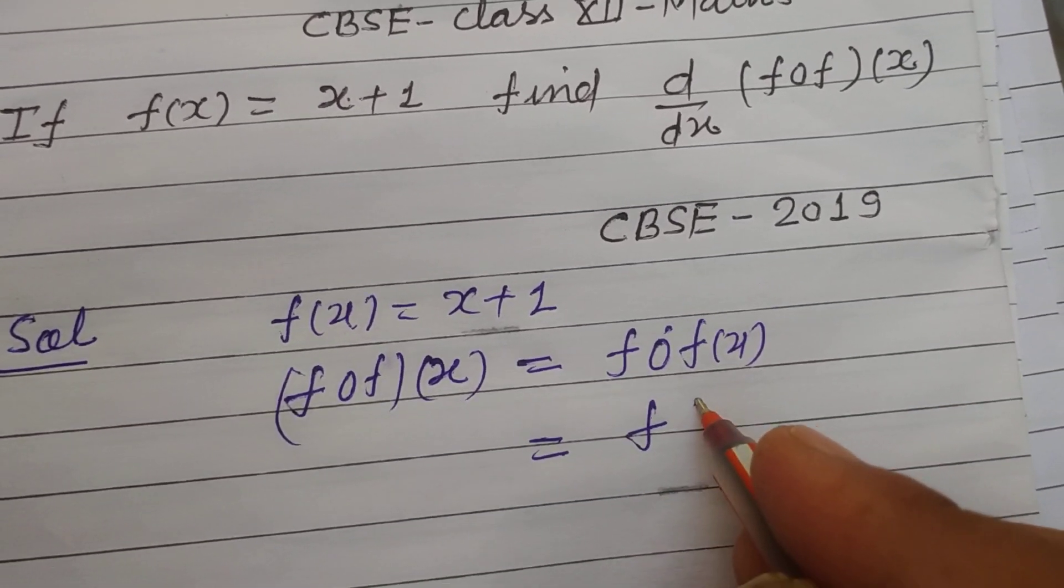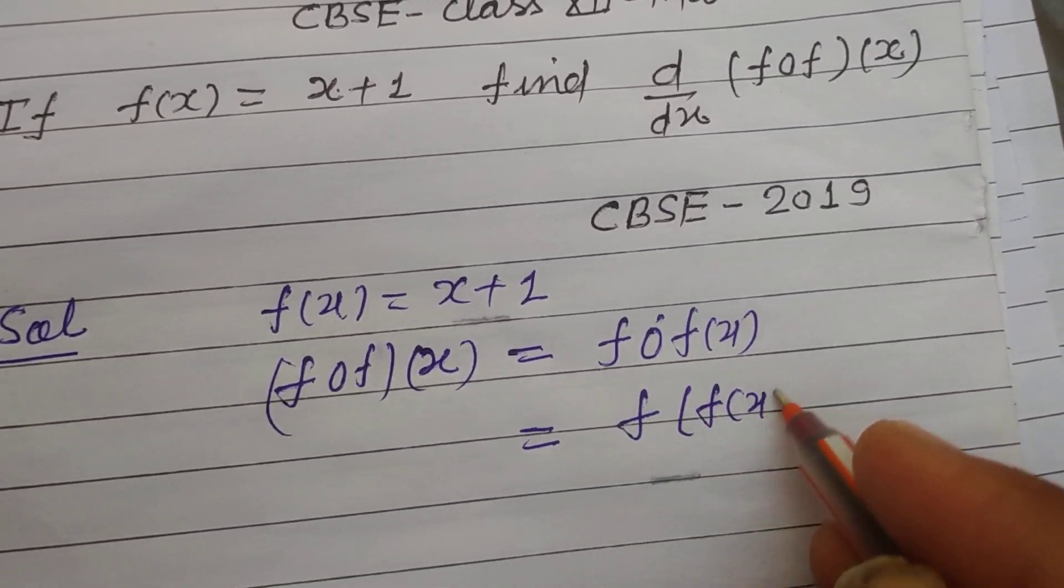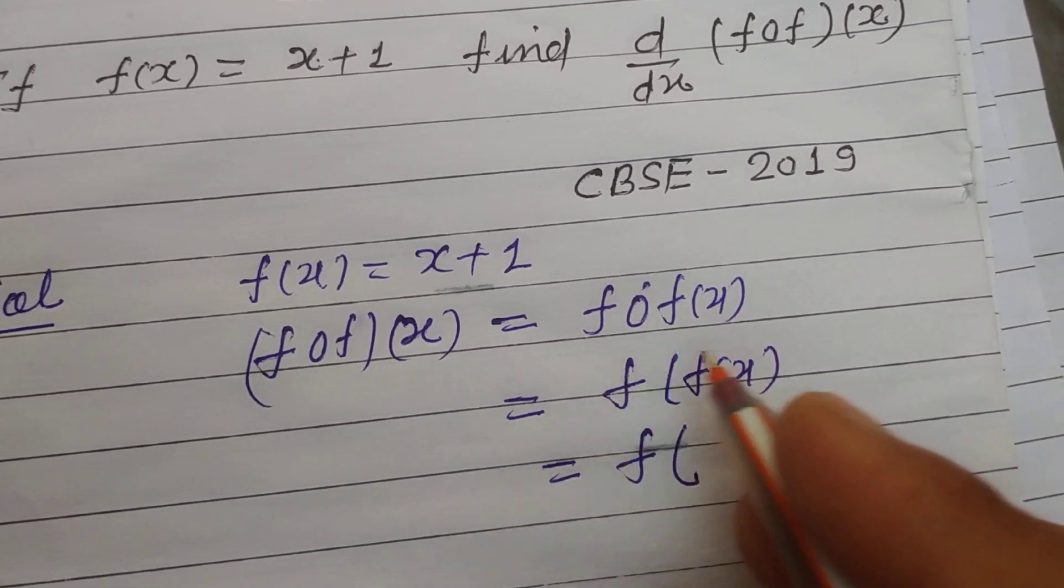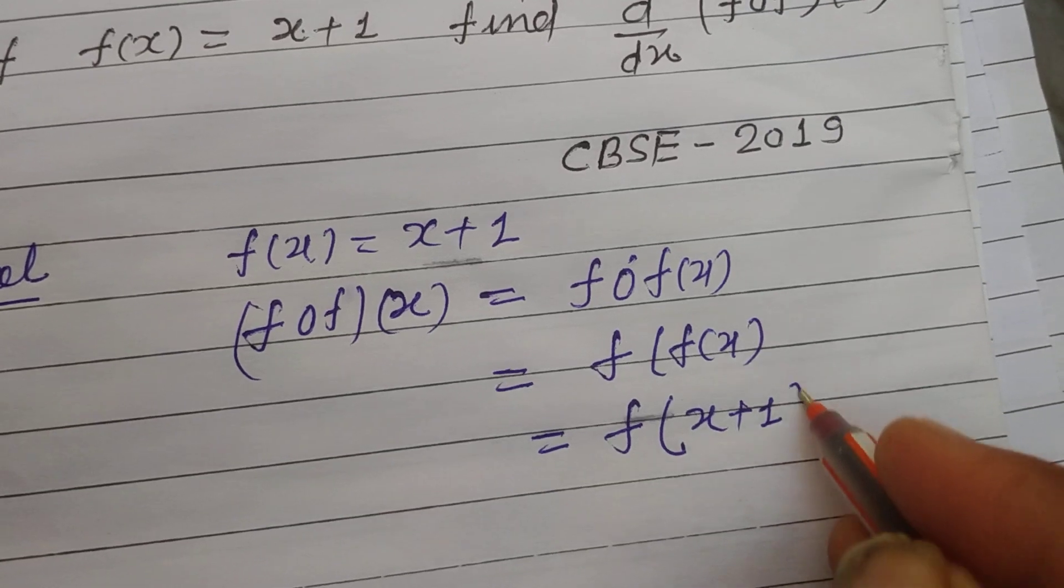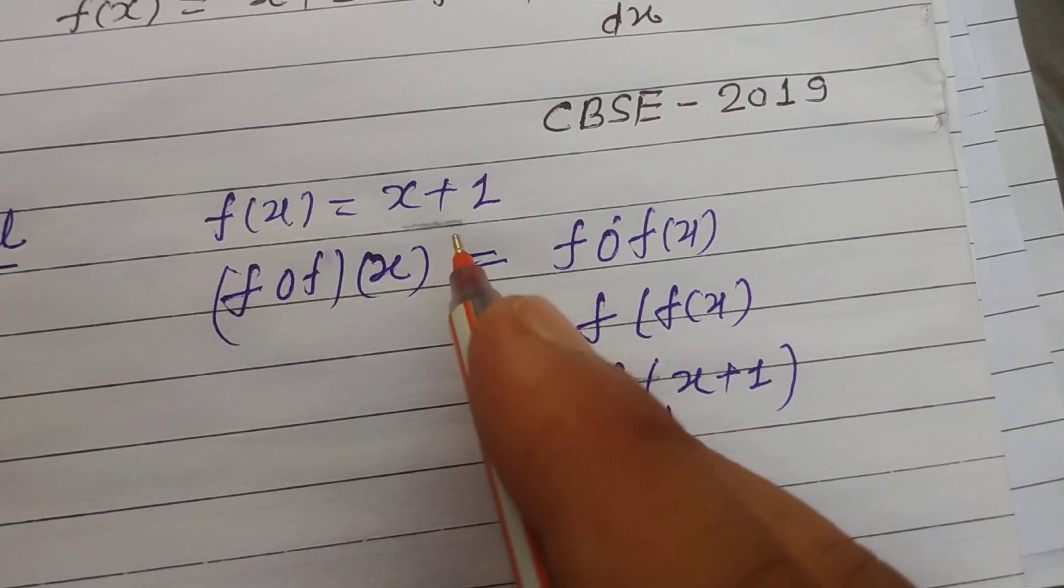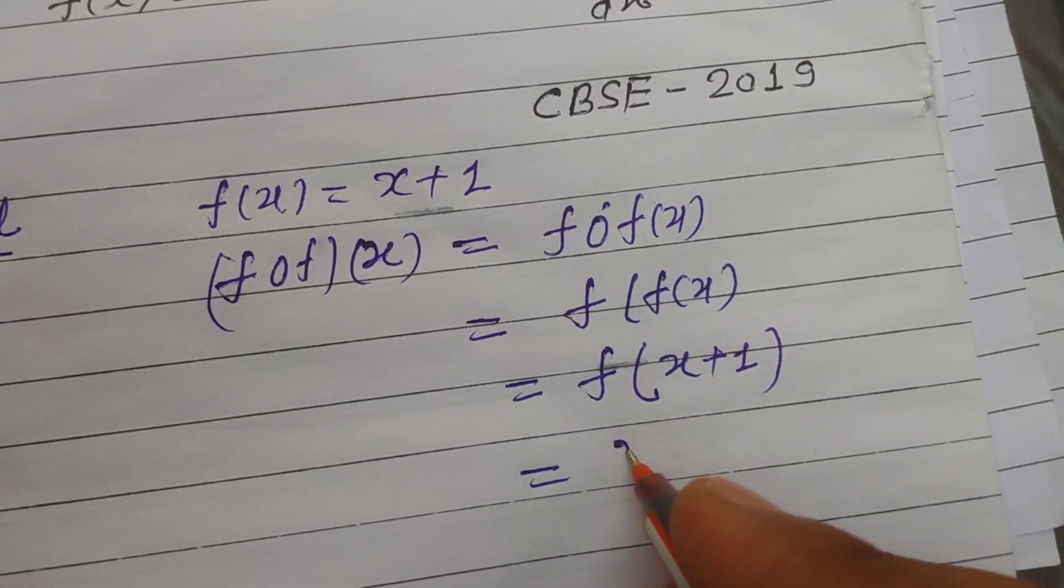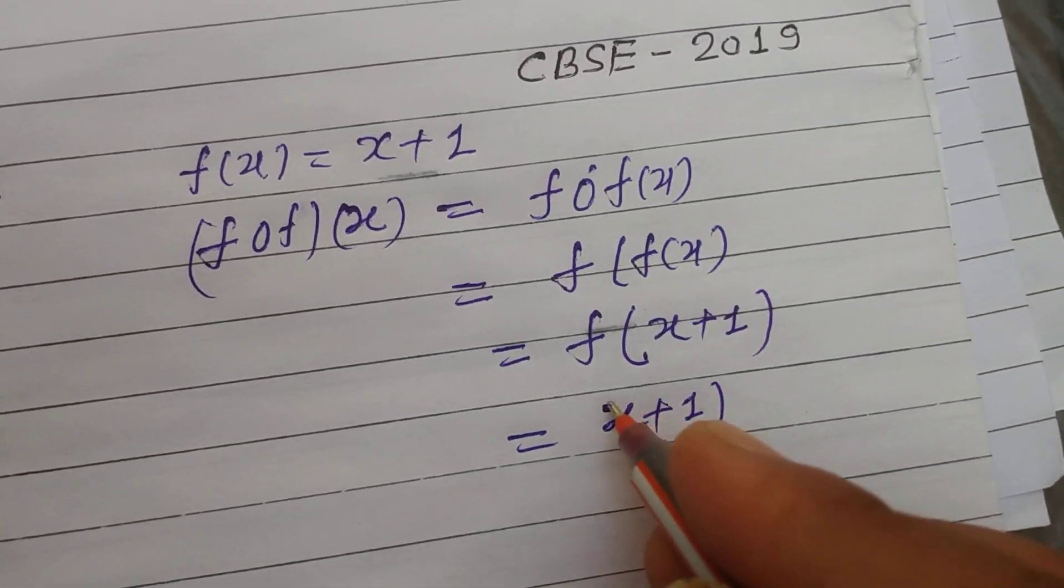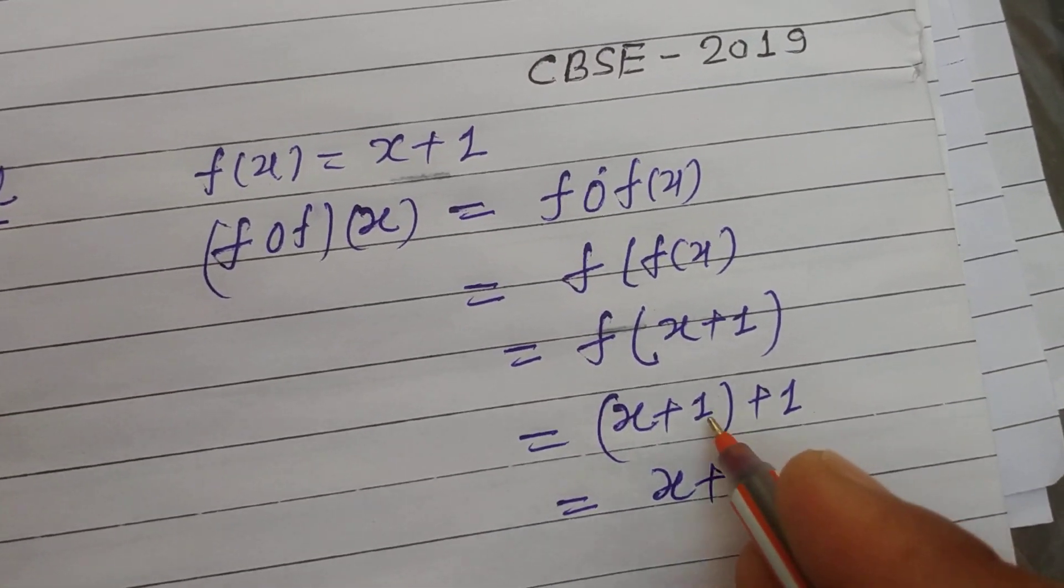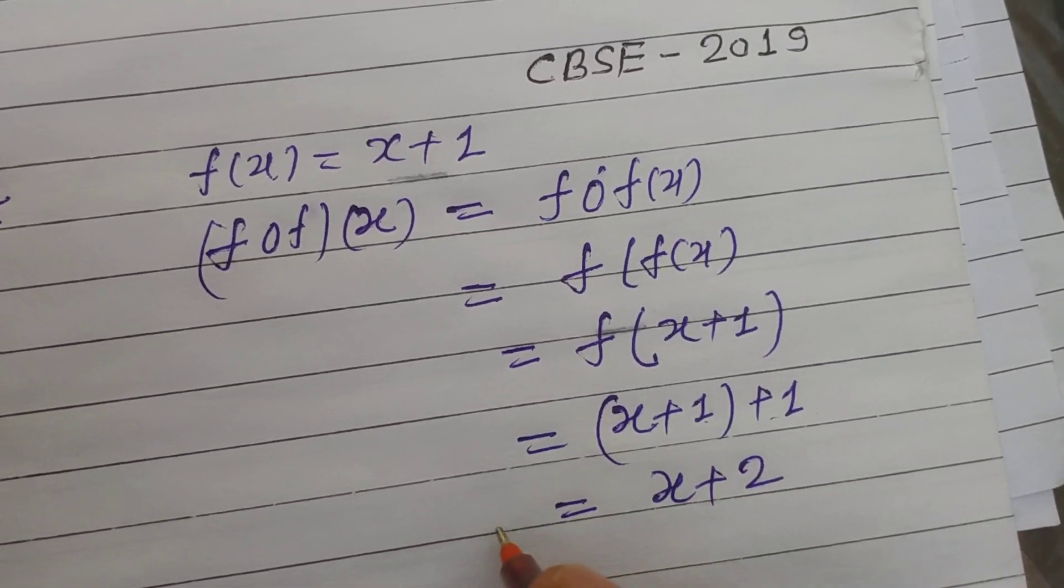It means f(f(x)), and f(f(x)) is x plus 1. Now we put x plus 1 in place of x in this, so this is x plus 1 plus 1. So we got (x plus 1) plus 1 equals 2. This is f(f(x)). Now differentiation of this, d/dx of f(f(x)).